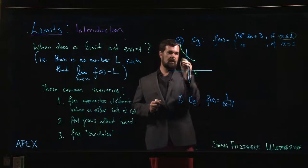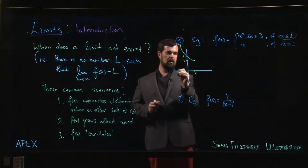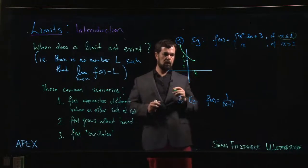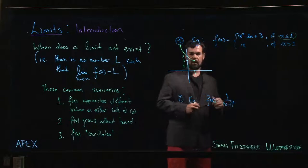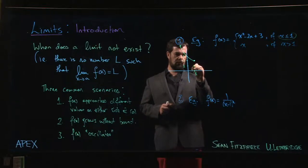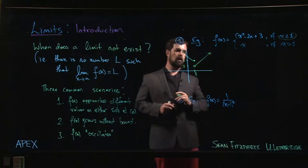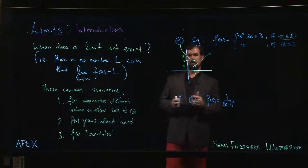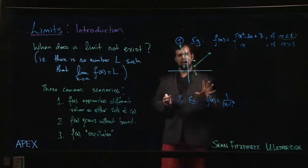The intercept is at three, three two one. On the other hand, if x is bigger than one, well then we have the line y equals x, but we don't plot it when x is less than one. We only start plotting it for x bigger than one and we have something that looks like that.